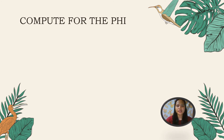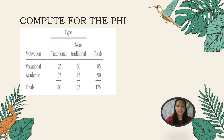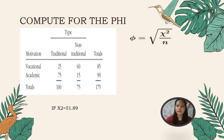Here is another example — compute for phi. After calculating the chi-square, which is 51.89, we apply the formula: phi equals the square root of chi-square divided by n. So phi equals the square root of 51.89 divided by 175, giving an answer of 0.55.